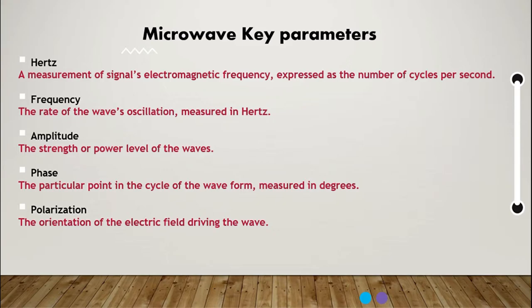Third, we have amplitude, the strength or power level of the waves. Fourth, we have phase, which is the particular point in the cycle of the waveform measured in degrees. And the last one is polarization, the orientation of the electrical field driving the wave.